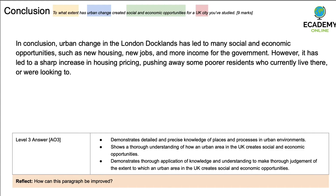The conclusion is very important for an evaluation style question. In particular, start with using words such as 'to a large extent' or 'to a small extent' — this is actually in the question itself, and it gives you the opportunity to use those specific words so the examiner knows that you are now evaluating at the end. In this conclusion, the candidate hasn't actually started with that and has talked just generically about social and economic opportunities being created. What would be really good here is if the student had actually said 'to a large extent' or 'to a small extent, economic and social opportunities were or were not created' and then given those factors as examples.